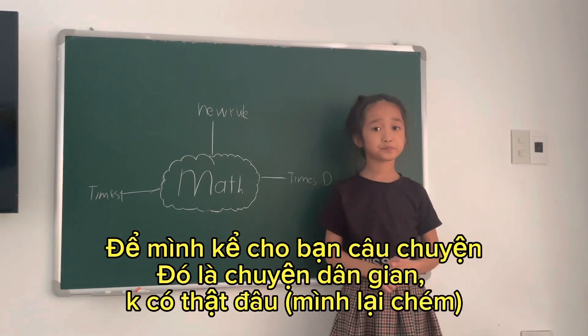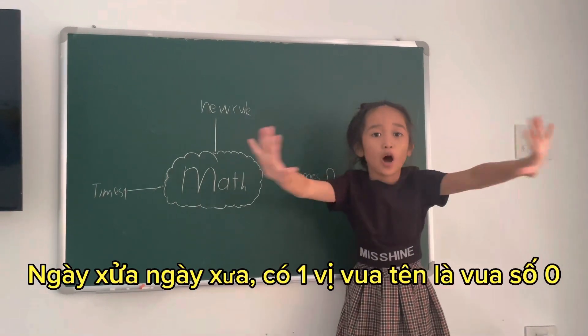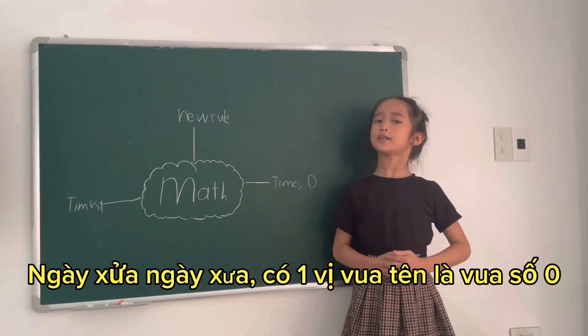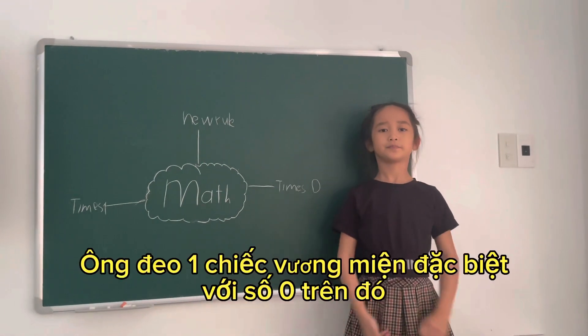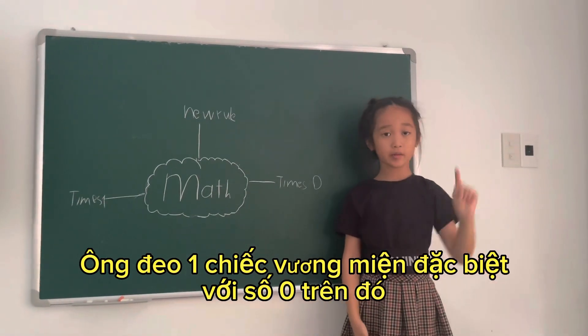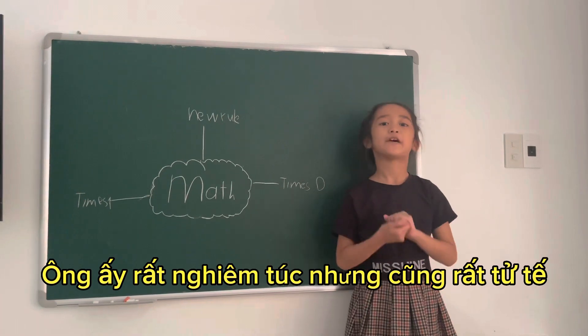Let me tell you a story. Long time ago there lived a king who named is King Zero. He's very serious and he wears a special crown with a number zero on it. He is serious but very kind.